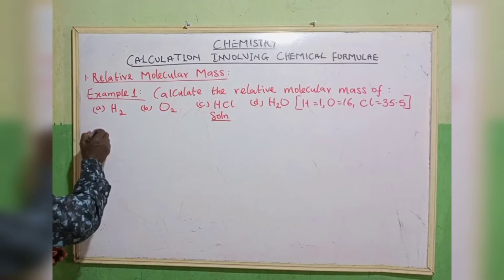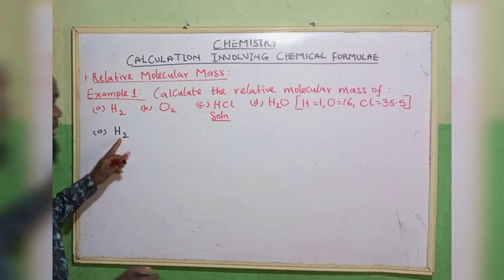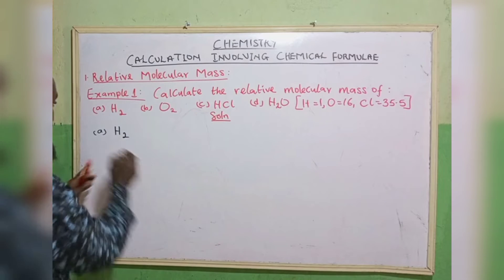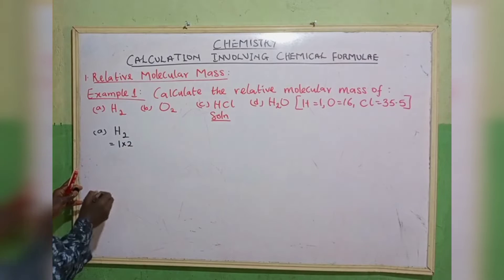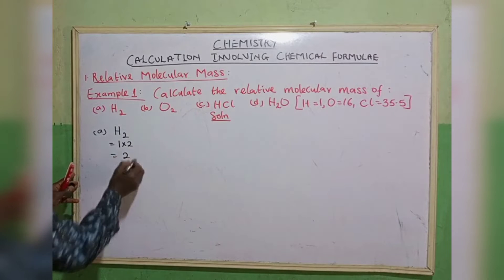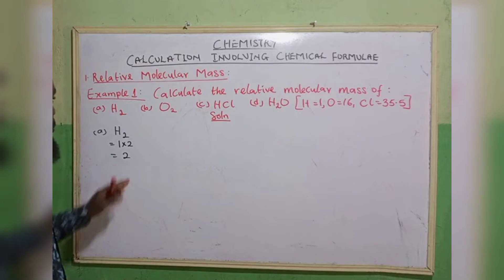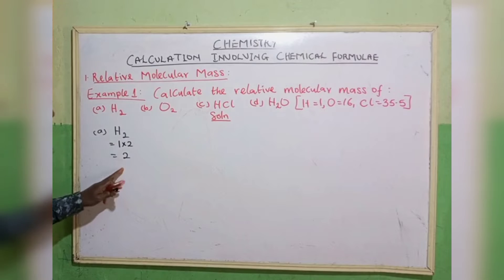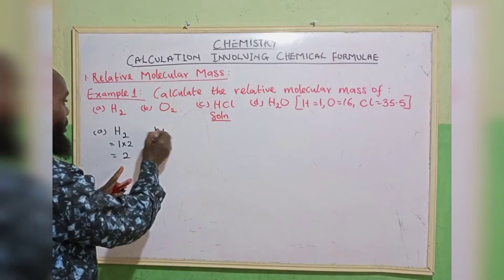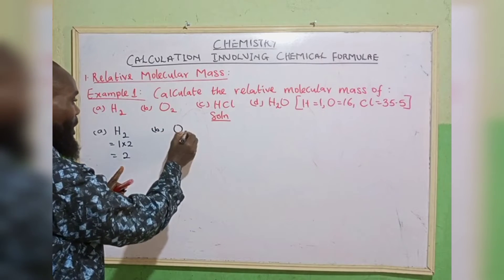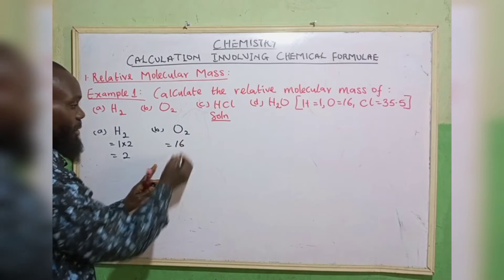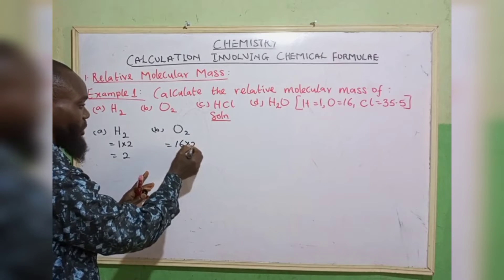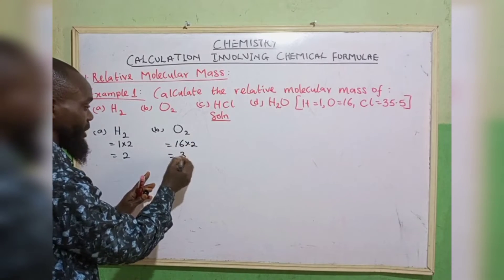The first one is hydrogen (H₂). The atomic mass of hydrogen is 1, multiplied by 2, so 1 times 2 gives us 2. The relative molecular mass of the hydrogen molecule is 2. The second one, oxygen molecule (O₂): the atomic mass of oxygen is 16 multiplied by 2, which gives 32.